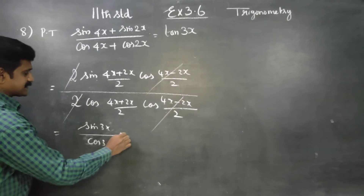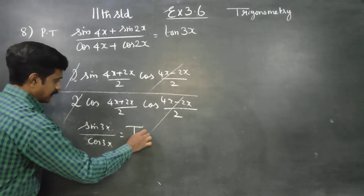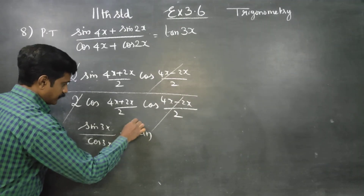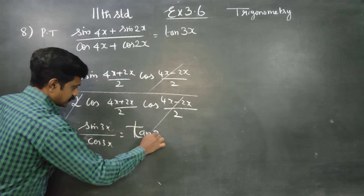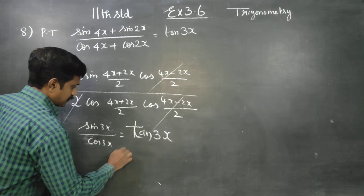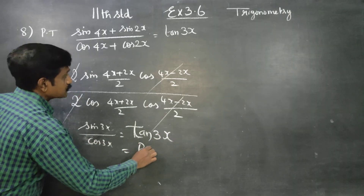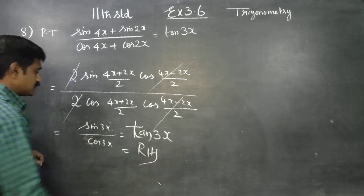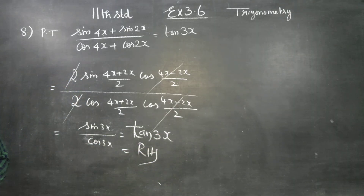What is cos by sin? That is tan. Therefore your answer is tan 3x. This is your RHS.